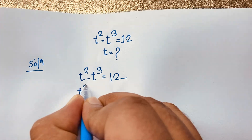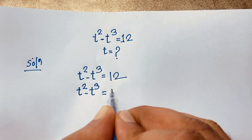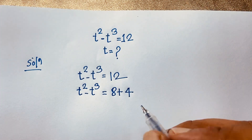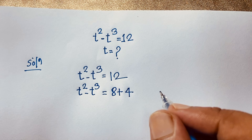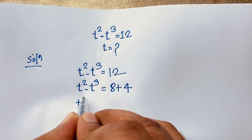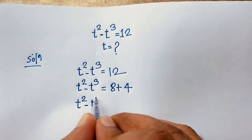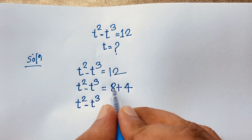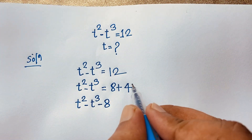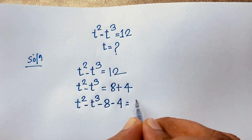Here, t to the power 2 minus t to the power 3 equals 12, and this 12 it will be 8 plus 4. You know that 8 plus 4 it will be 12. Now, t to the power 2 minus t to the power 3. If I move this positive 8 to this side, it will be negative 8. And if I move this 4 to this side, it will be negative 4, equal to 0.